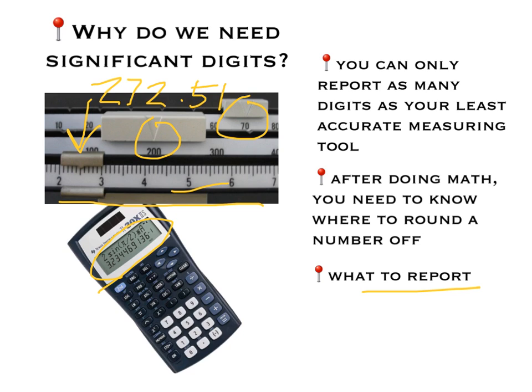If we took 3.234469136 on the calculator and needed to report it to 5 digits, we'd need to know where to round. We would take 3.234, and we need one more, so it's a 4 also, but beside it is a 6, so we would round that to a 5. That number, rounded to 5 sig figs, is 3.2345.